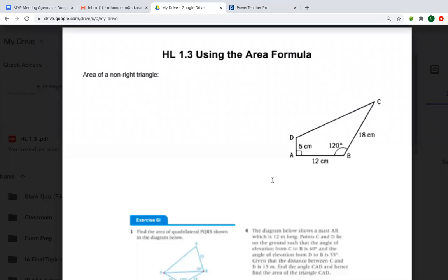Okay, so first things first, let's review what the area of a non-right triangle is. It would be one half AB sine of angle C. Now just a reminder, whatever your angle is here, then the other two sides are what you're using. So it has to be a side angle side that you're looking at.